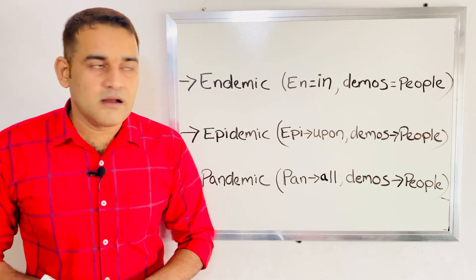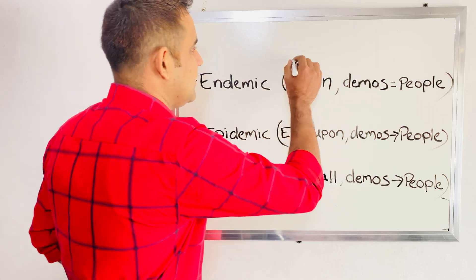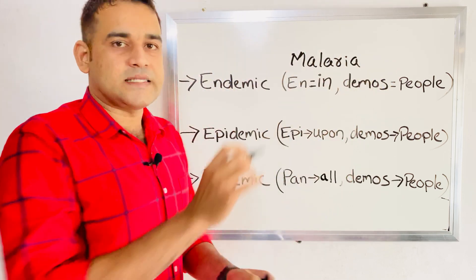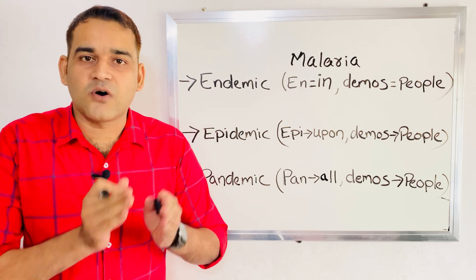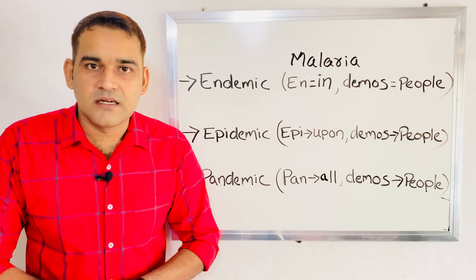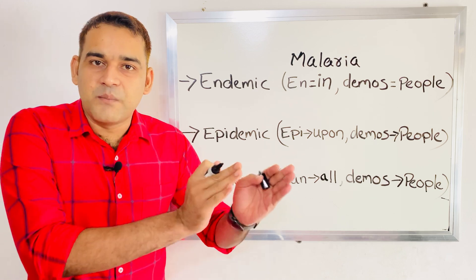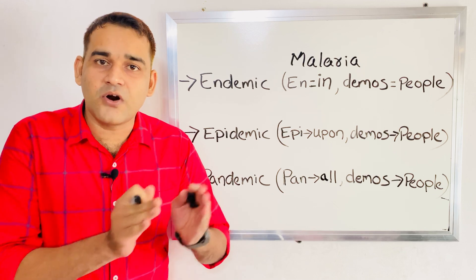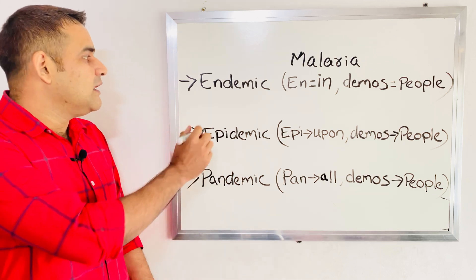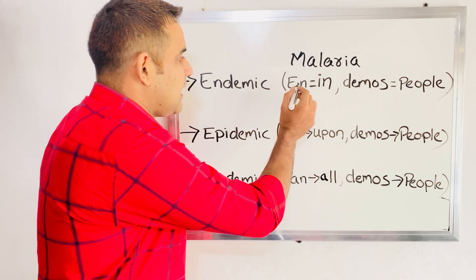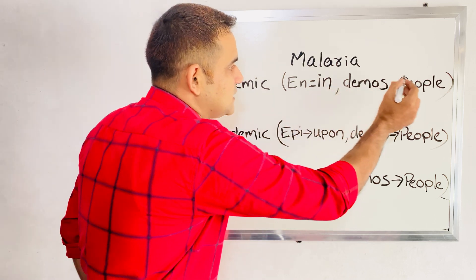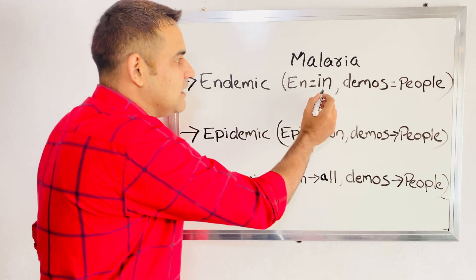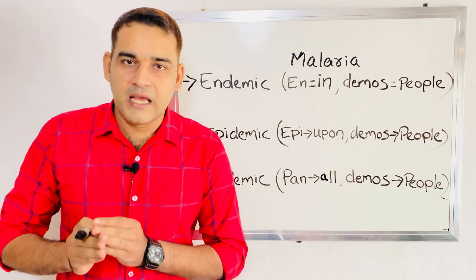For example, in India, malaria is an example of endemic — it is constant and fixed in that particular area. The word endemic comes from 'en', meaning 'in', and 'demos', meaning 'people'. So endemic refers to the constant presence of a disease in the people of a particular area.